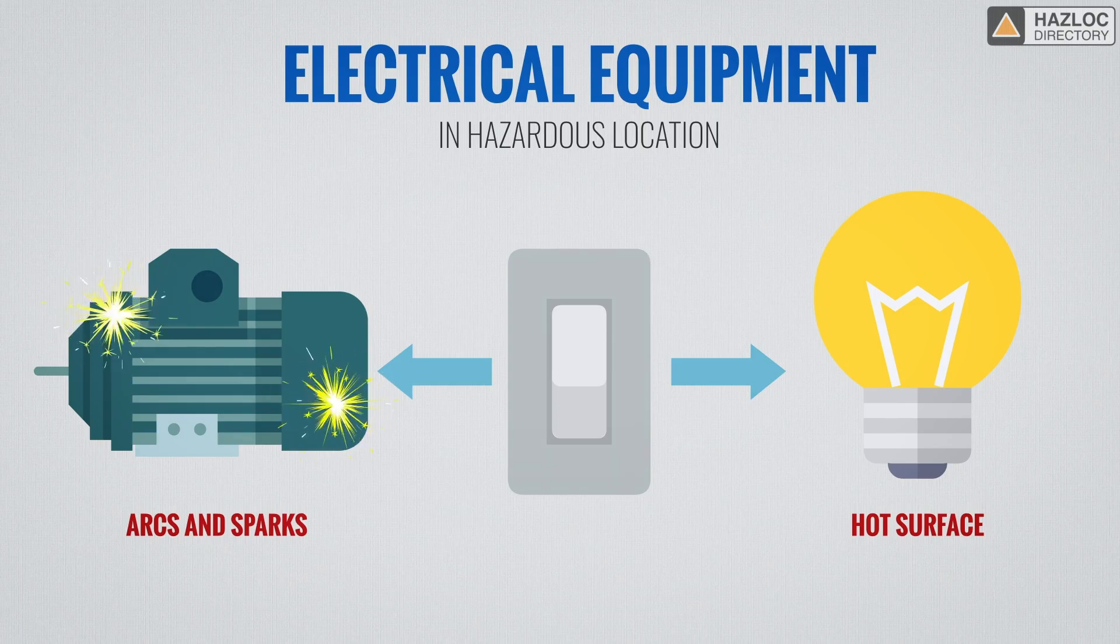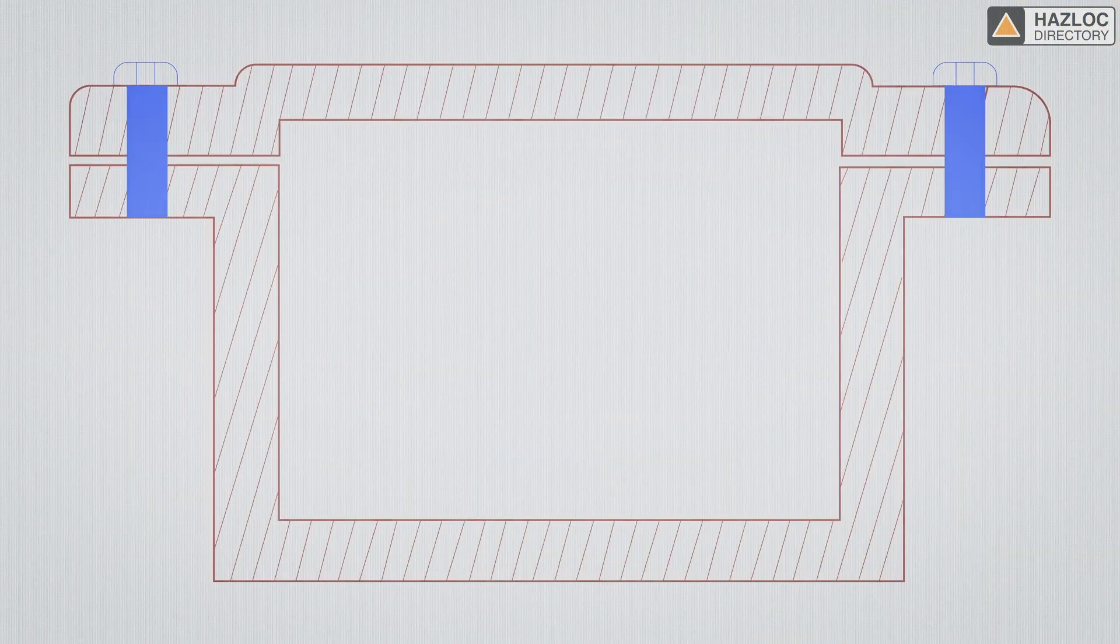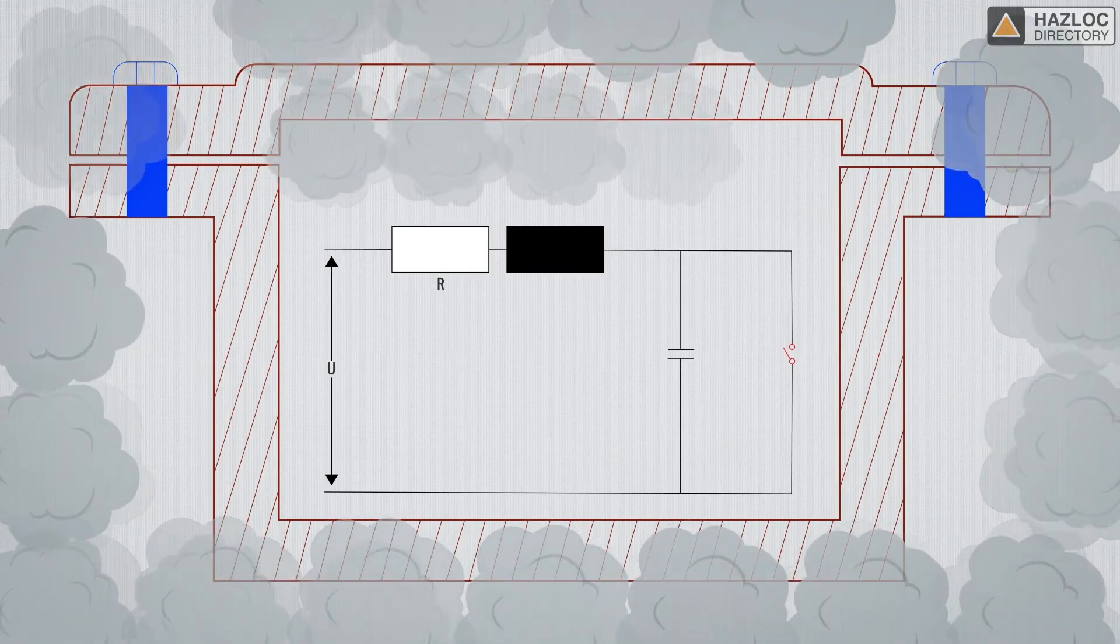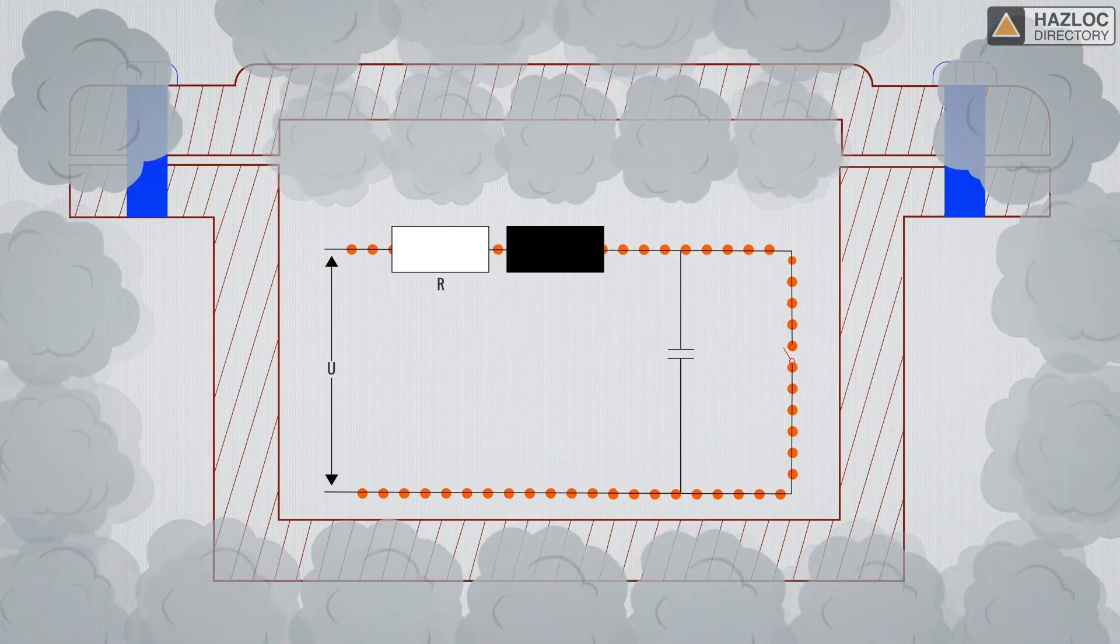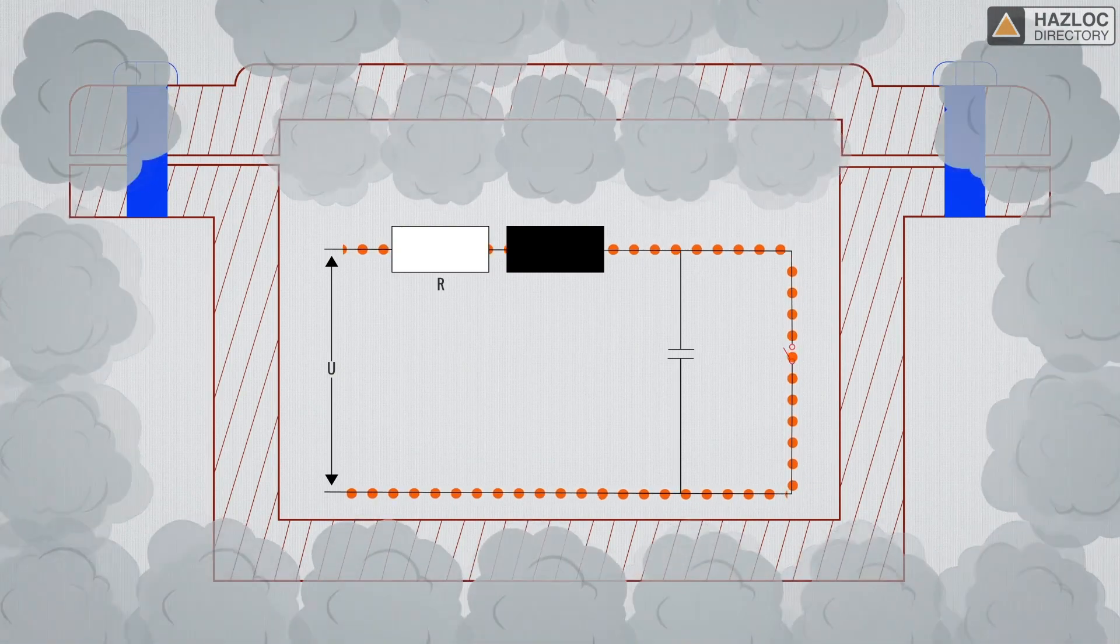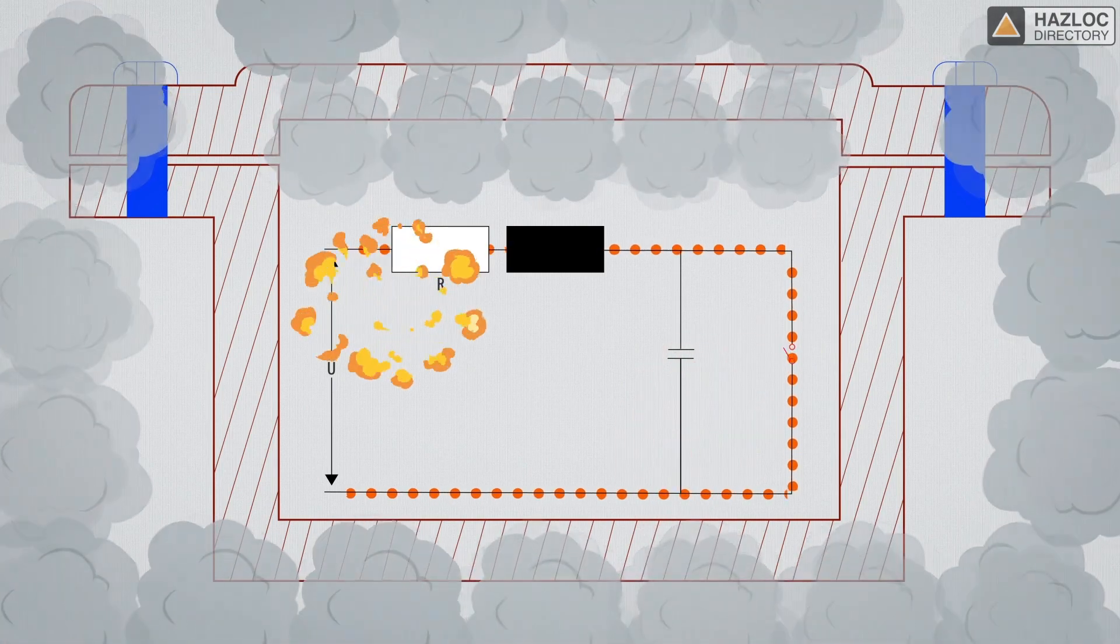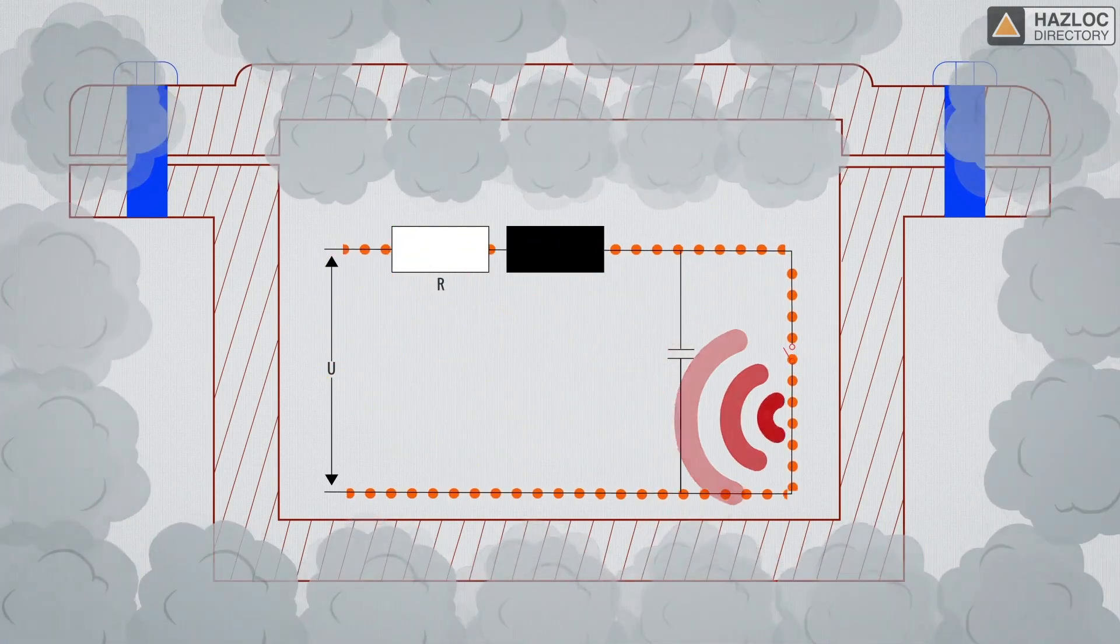When an explosive gas makes contact with a source of ignition, an explosion can result. One effective way to control or contain such an explosion in hazardous areas is to place the electrical components containing hot surfaces or arcs and sparks inside an explosion-proof enclosure. Unless that enclosure is designed and installed correctly, pressure piling can take place, making the explosion worse.